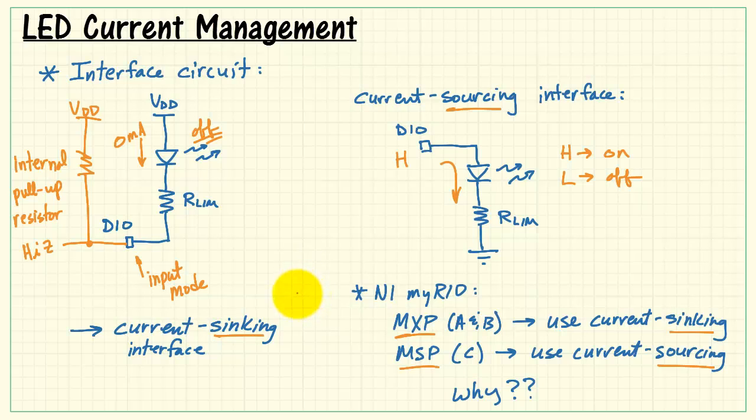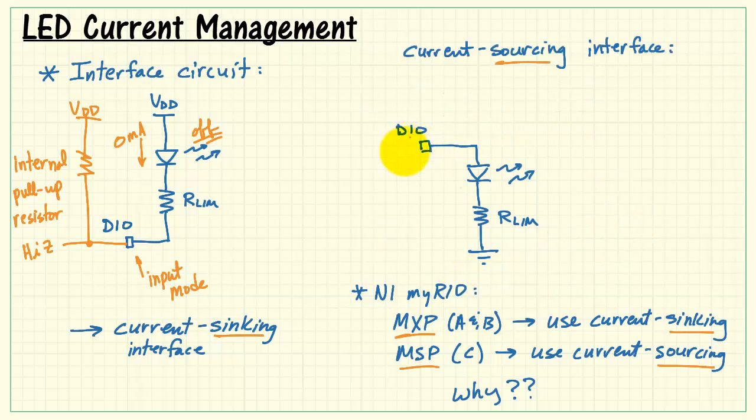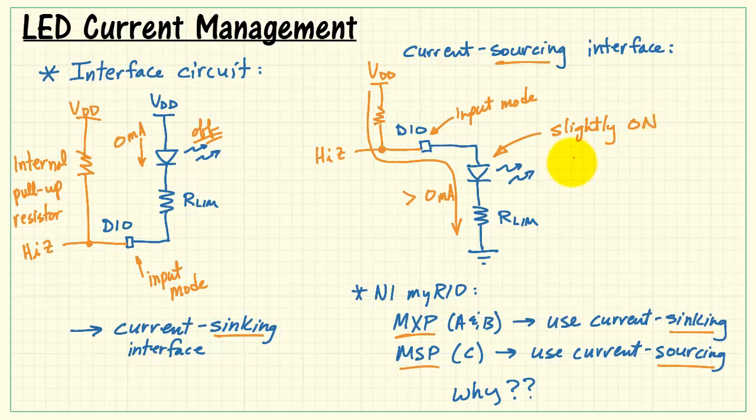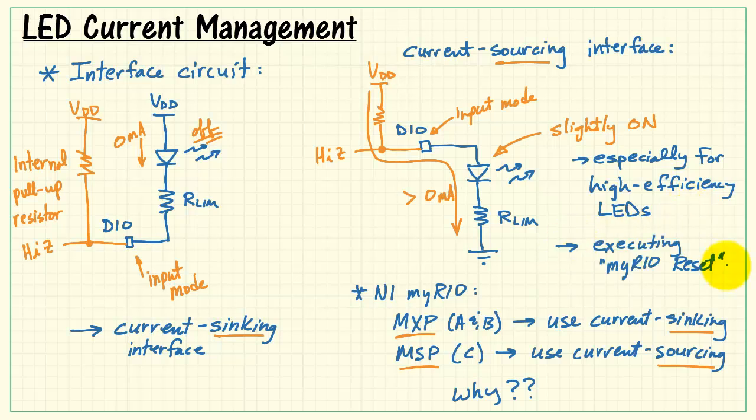I recommend the current sinking interface for the MXP connector. Let's see what happens if you were to use the current sourcing interface on the MXP connector. Well, we've got this pull-up resistor to VDD, and when the DIO is in input mode, this looks like high Z, and we can see a small, but yet potentially noticeable current flowing through the LED. The LED is going to be slightly on, and especially for high-efficiency LEDs, this could be quite noticeable. The LED might look like it's normally on. Especially after executing a MyRIO reset, or when you first turn on the product, all the DIOs are in the input state.